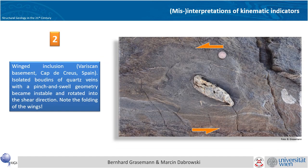The next example is a winged inclusion from the Buriskam basement in Cap de Creos in Spain. You see these isolated pinch-and-swell geometry with tails which form this spiral shape, and in analogy to delta clast this is rotating to the left, and therefore the shear sense is top to the left.